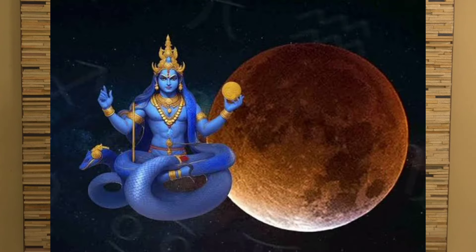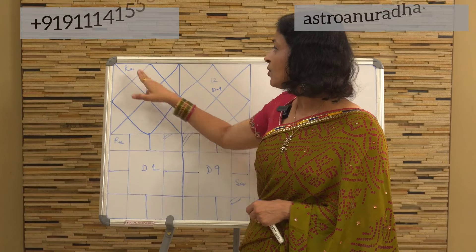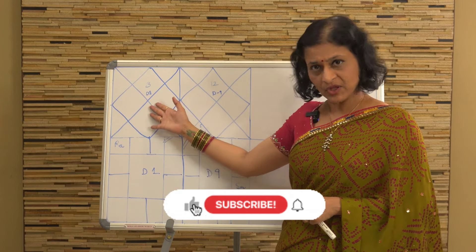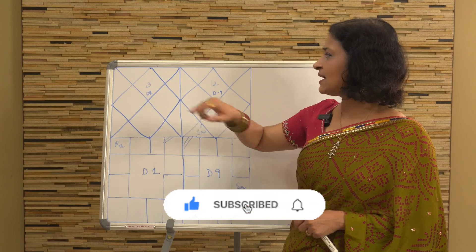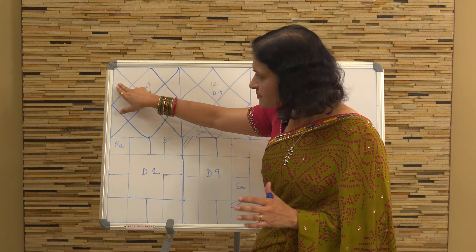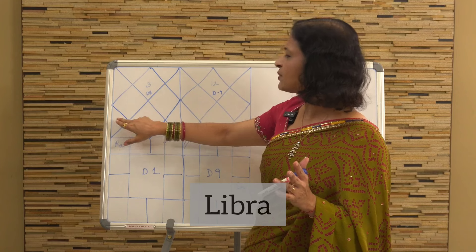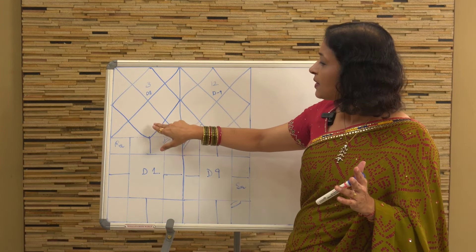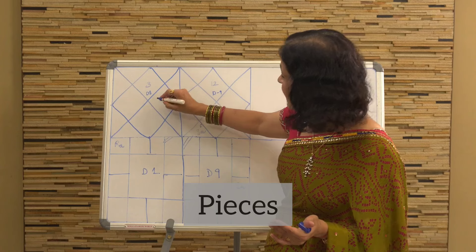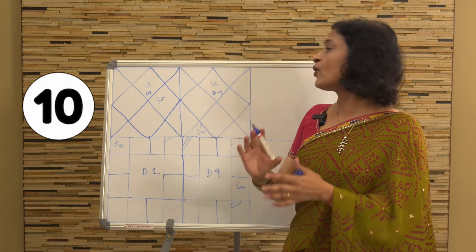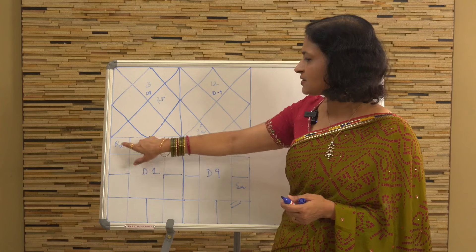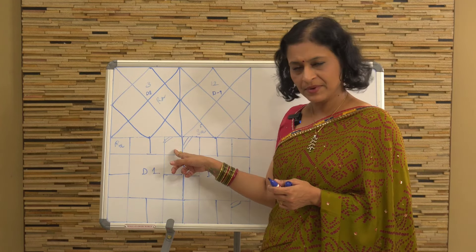Which house Rahu is transiting for us is very important. For a person who has the lagna of Gemini — shown here in both North Indian and South Indian chart styles — Rahu is currently passing through the 10th house for Gemini lagna people.